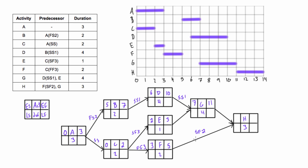Seven plus four gives us an earliest finish of eleven for G. Looking at activity H, its earliest start according to F is based on start-to-finish with lag two - so H could finish two days after F starts, giving a finish of five, and subtracting three gives a potential start of two. But according to G, it's a regular finish-to-start, so we could also have eleven. Eleven is greater than two, so eleven wins. We put eleven as the early start of H, and adding three gives us fourteen for our project duration.